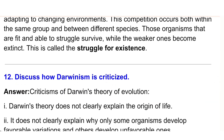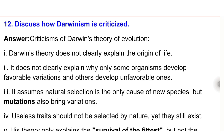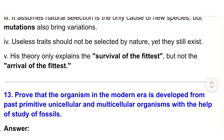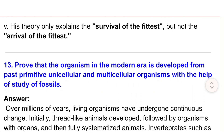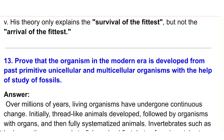12) Discuss how Darwinism is criticized. Answer: Criticisms of Darwin's theory: i) It does not clearly explain the origin of life. ii) It does not explain why only some organisms develop favorable variations. iii) It assumes natural selection is the only cause of new species, but mutations also bring variations. iv) Useless traits should not be selected by nature, yet they still exist. v) His theory only explains the survival of the fittest, but not the arrival of the fittest.